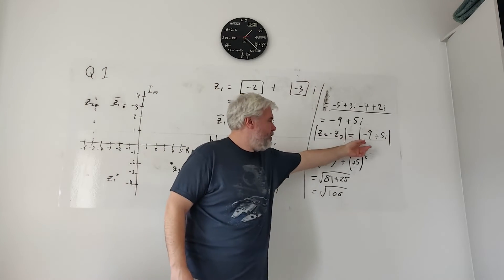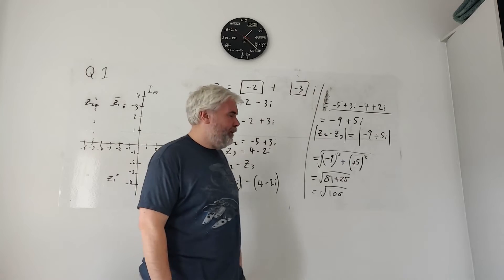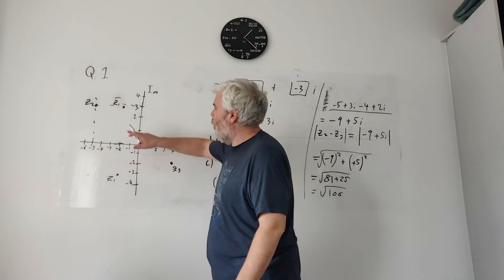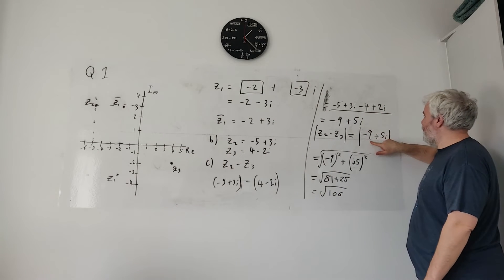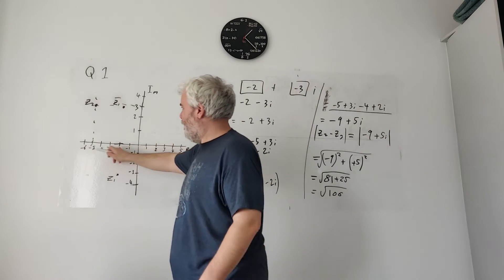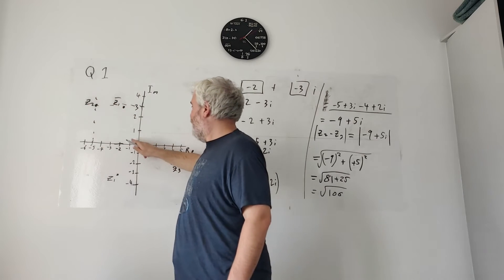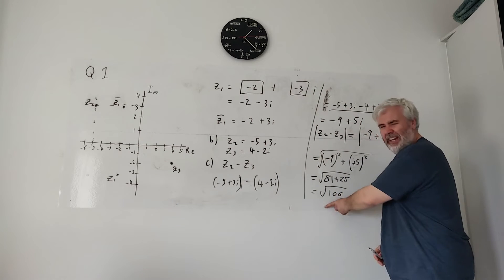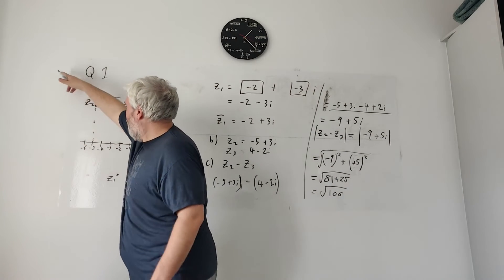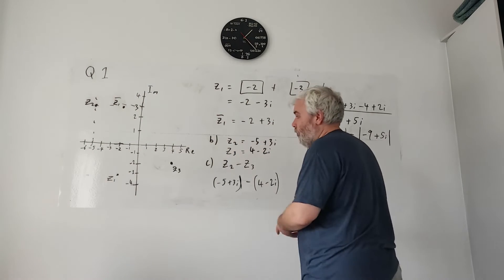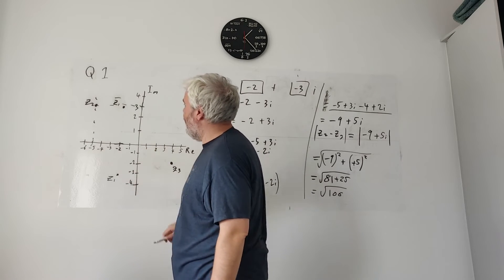As a little extra: the modulus means the distance of a point to the centre of the diagram. The point minus 9 plus 5i is at minus 9 across and 5 up — the distance from that to the centre is the square root of 106, which is about 10.2, and that looks about right. The modulus of Z3 would be its distance to the centre, and so on.